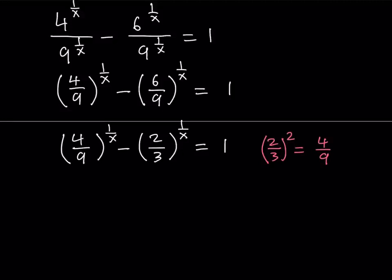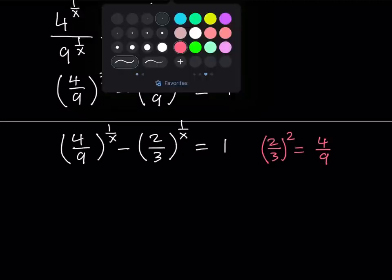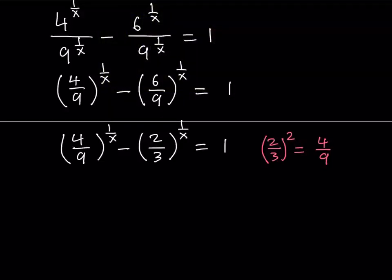So, what am I going to do? I'm going to call this u. So, suppose 2 over 3 to the power 1 over x is equal to u. Then, this becomes u squared, because 4 9s is 2 3rds squared. Same exponent. So, we just need to square the base. So, this becomes u squared minus u is equal to 1.